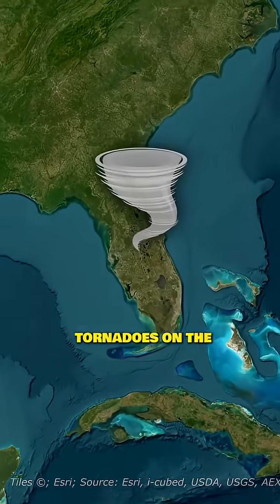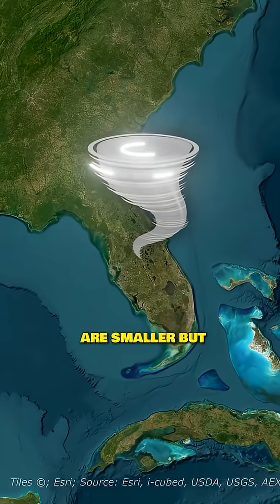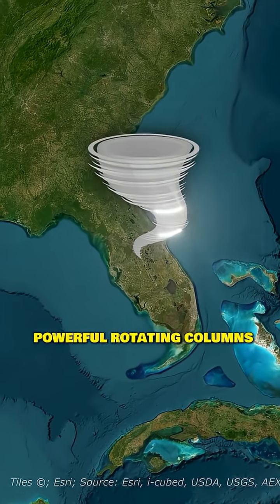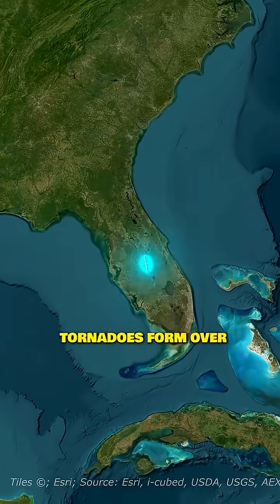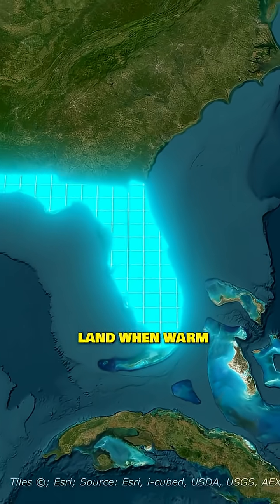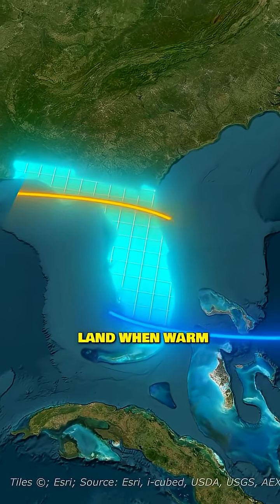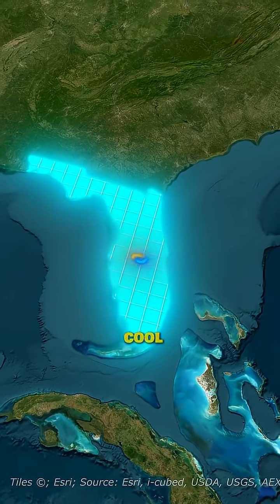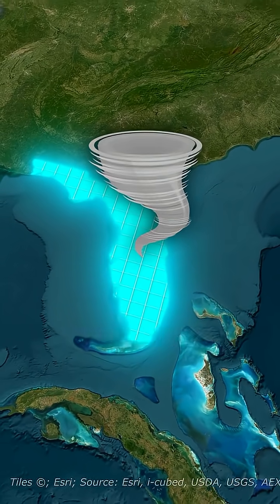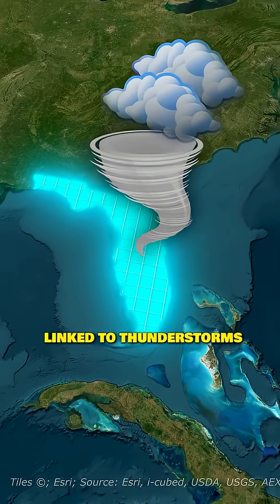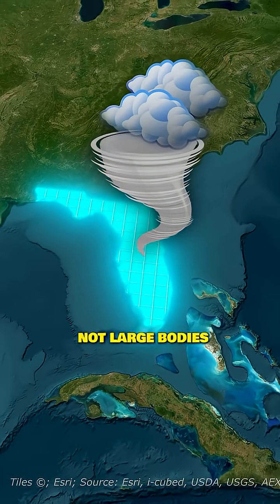Tornadoes, on the other hand, are smaller but powerful rotating columns of air. Tornadoes form over land, when warm, humid air meets cool, dry air, and are typically linked to thunderstorms, not large bodies of water.